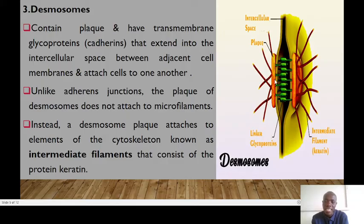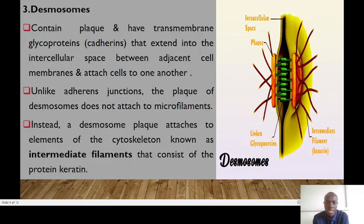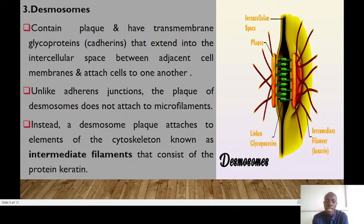The third type is the desmosomes. How do desmosomes appear? They appear as strong Velcro-like connections between cells. We have cadherin proteins linked to intermediate filaments to provide robust adhesion and structural support, especially in tissue subjected to mechanical stress, such as the skin and cardiac muscles. As a nurse, recognizing the significance of desmosomes can guide care in patients with conditions like wounds and cardiac tissue problems.